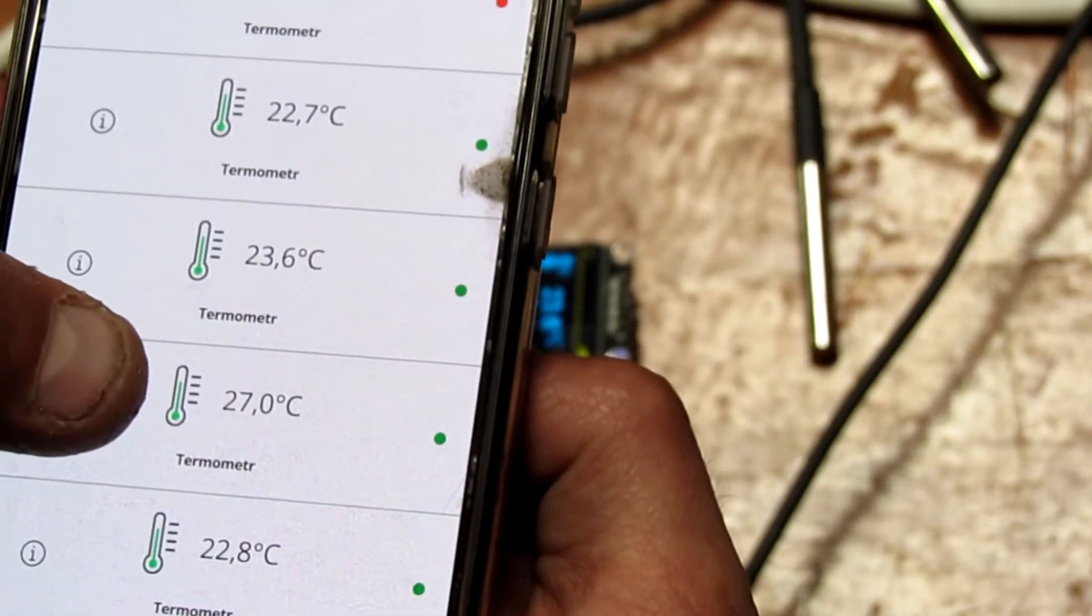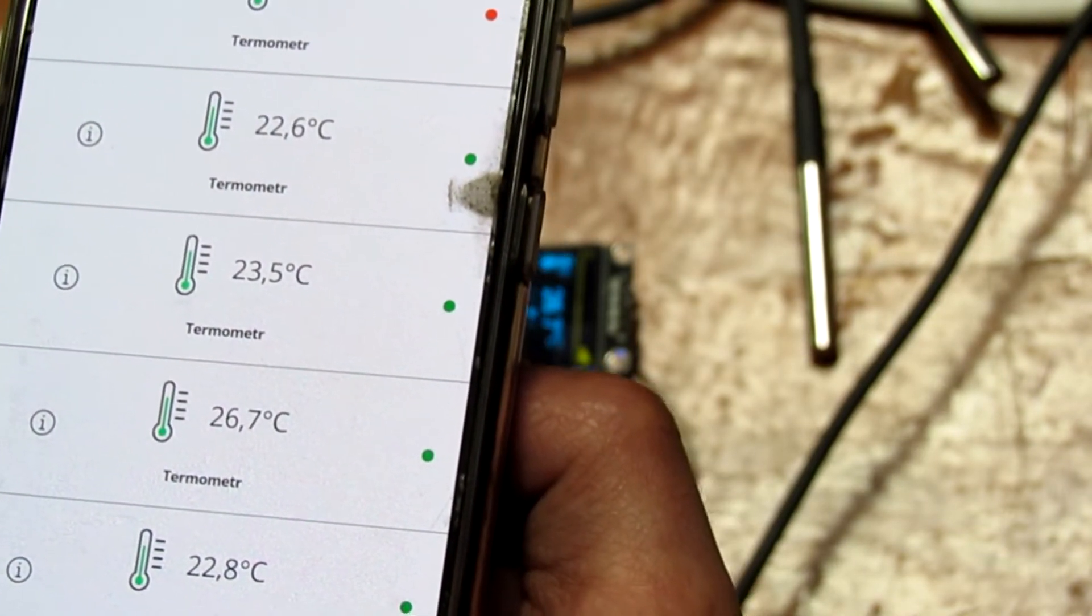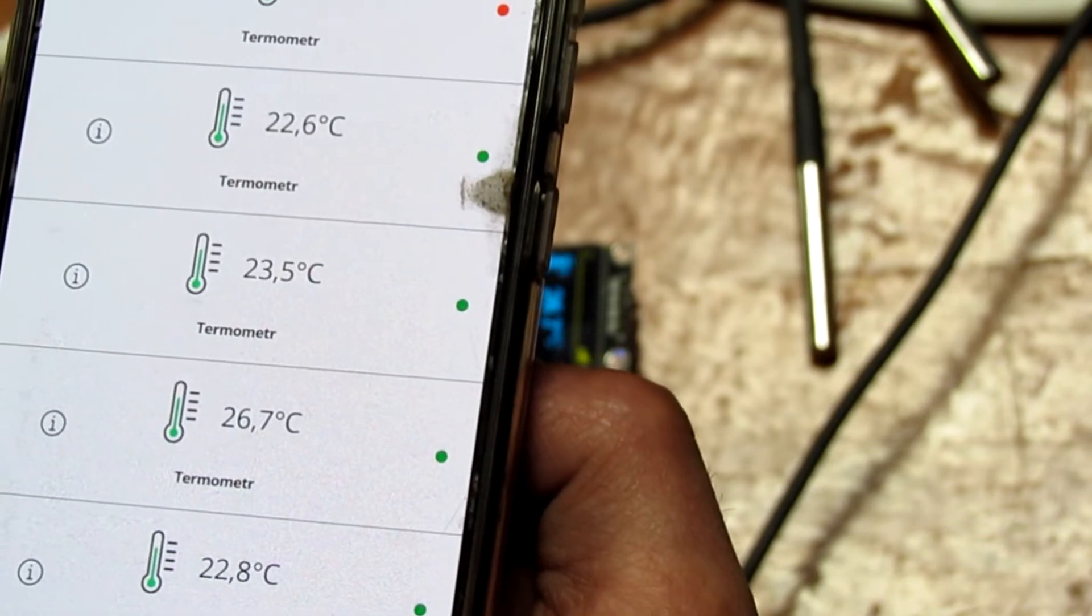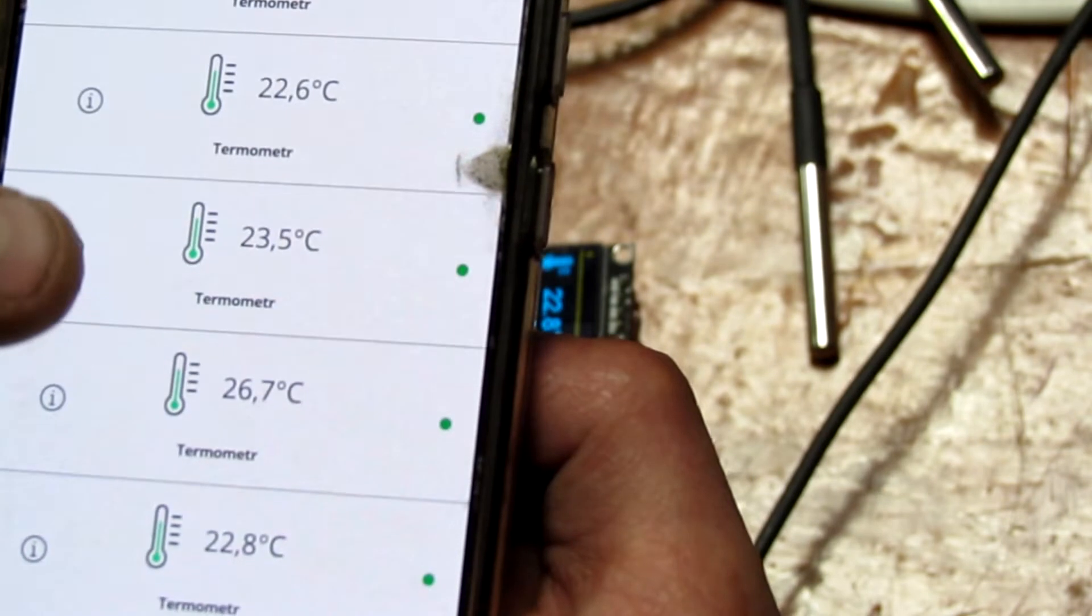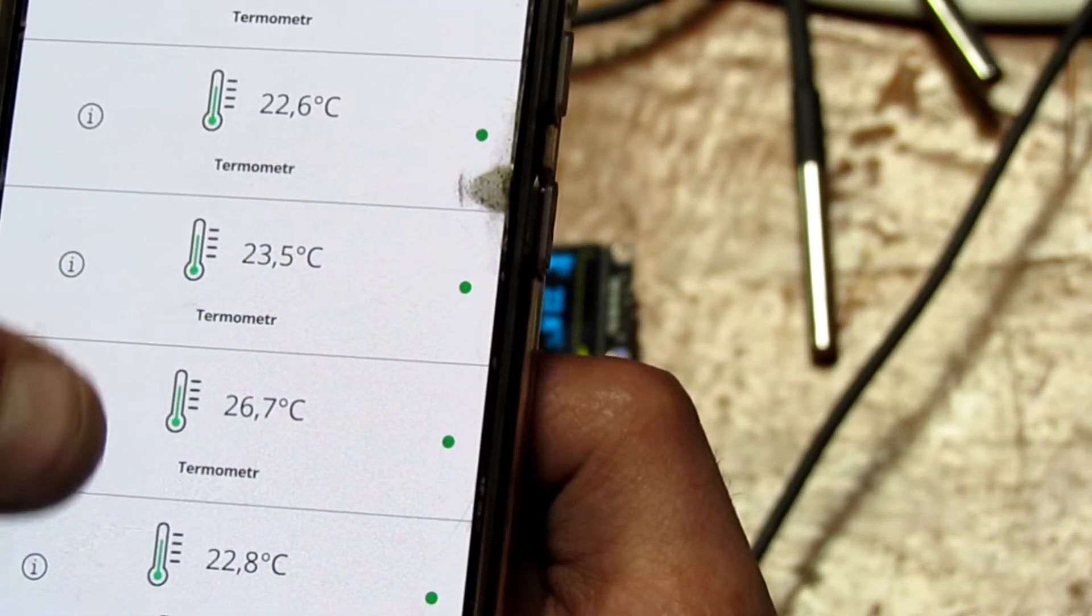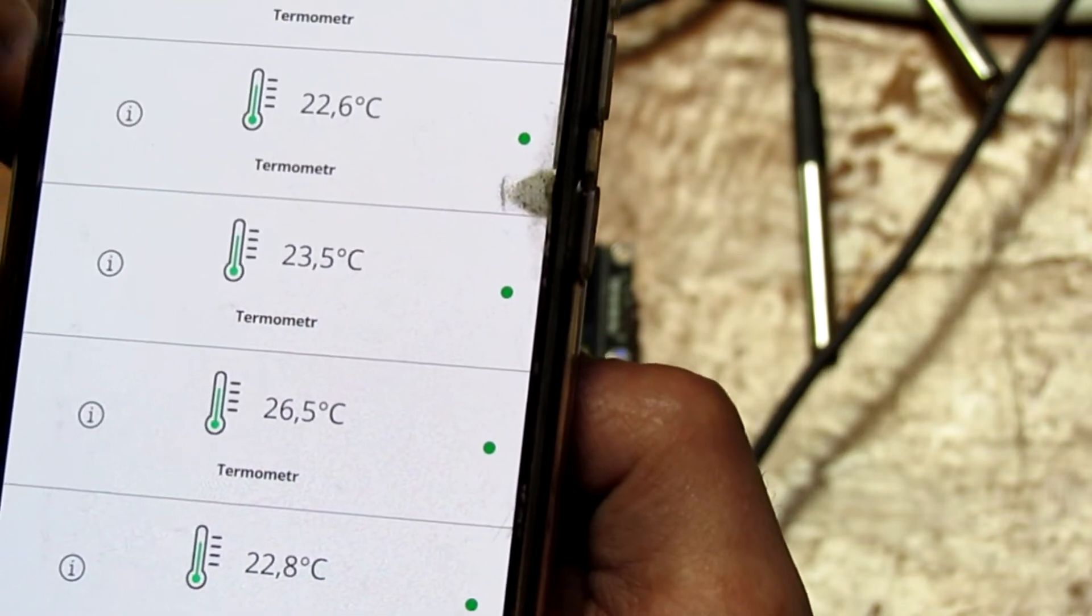Tak jak mówiłem, ten 27 troszkę go podgrzałem lutownicą, by sprawdzić, czy te czujniki prawidłowo pracują. Wiadomo, że można skalibrować te czujniki w cloudzie, także tutaj nie ma problemu.